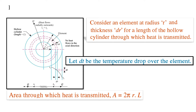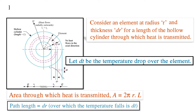The area through which heat is transmitted — as we know, the area of the cylinder is 2πrl, where l is the height or length of the cylinder. The path length is equal to dr, over which the temperature force is dp.